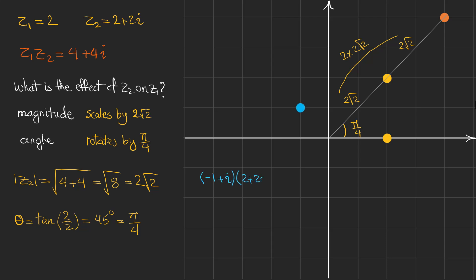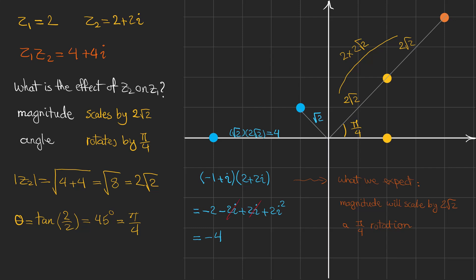Let's verify with another complex number. We expect the magnitude to be scaled by 2 times the square root of 2 and the angle to be rotated by 45 degrees. After calculation, the answer is minus 4 — a real number. The initial magnitude was the square root of 2, and the final magnitude is 4, which equals the square root of 2 times 2 root 2. The angle between minus 1 plus i and the result is 45 degrees, confirming our complex number has been rotated by 45 degrees.